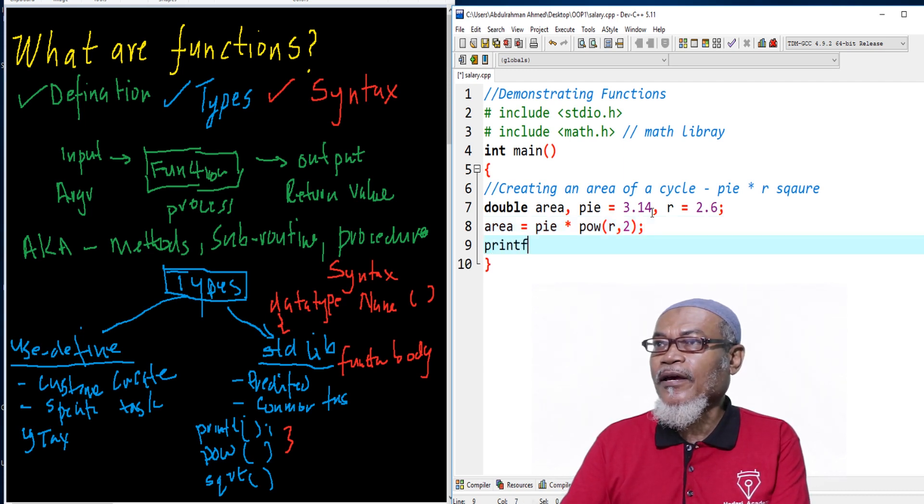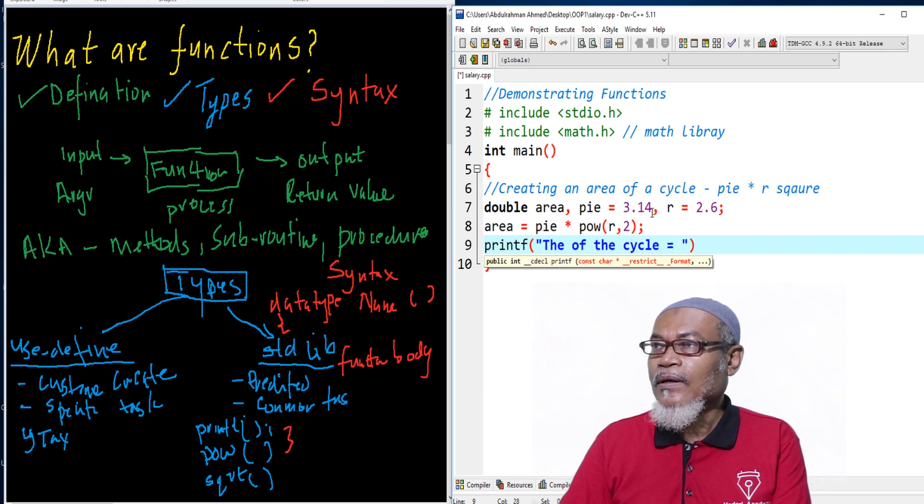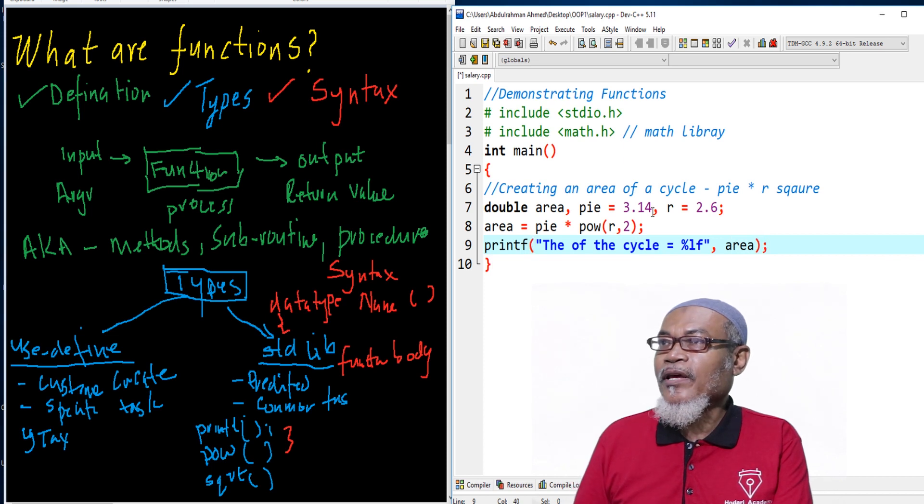Here we are putting up our printf. We are saying the area of the circle equals to, and then we are having our format specifier for double, which is long float. Then according to the syntax, we are putting up our variable called area. This one, when executed, should give us that particular one. Let's execute this particular program.